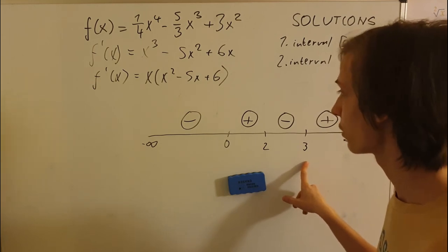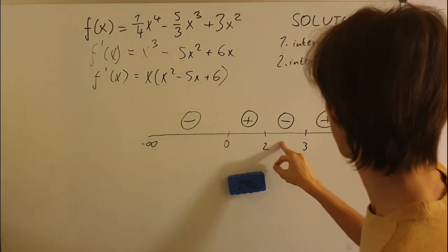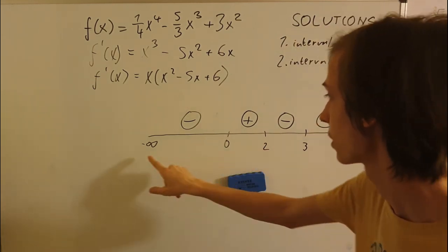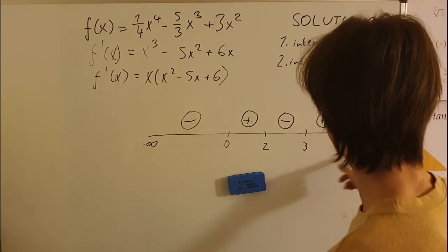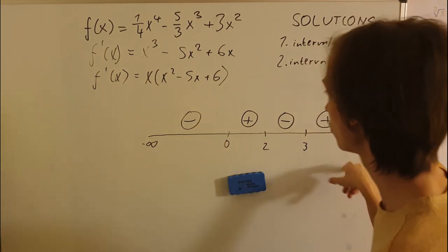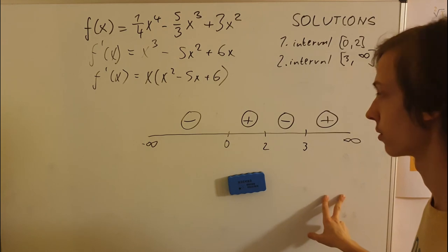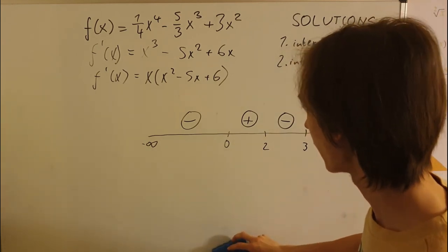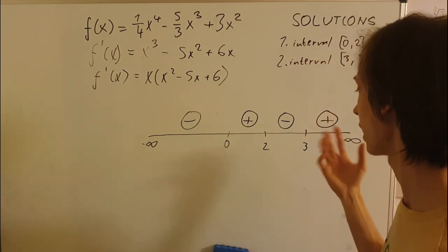We got three critical points: zero, two, three, and we created four intervals on this line because we divided minus infinity up until infinity into four intervals with these three critical points.